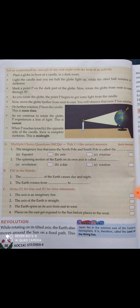Now move the globe further from west to east. You will observe that now P has sunshine. So as you slowly continue to rotate, P will start receiving sunshine. With further rotation, P faces the candle — this is noon time.